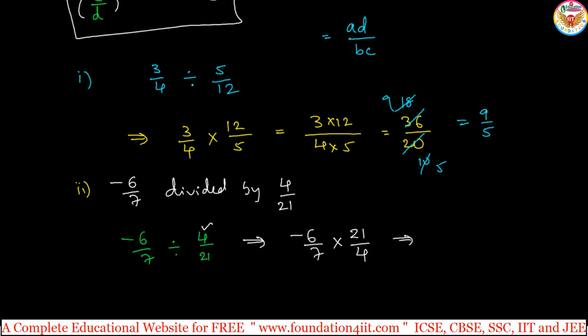Now you can directly, normal multiplication process you can apply. -6 into 21 by 7 into 4, just you can simplify. If instead of multiplication, you can simplify like this also: 6 and 4, 2s are 2, 3s are, and 7, 1s are 7, 3s are. Directly also you can multiply. Minus is there, 3 into 3 is 9 divided by 2. -9/2 is answer.